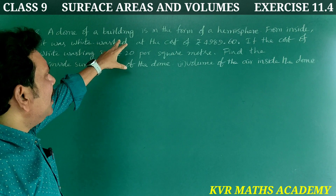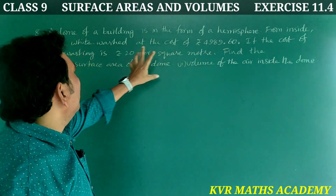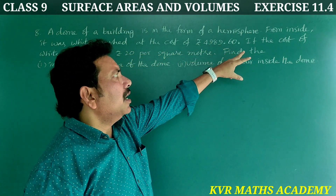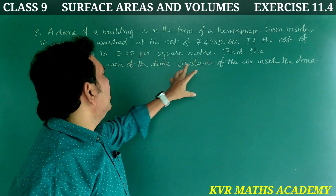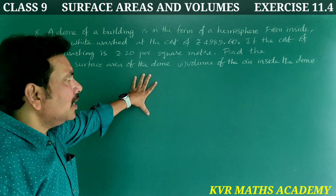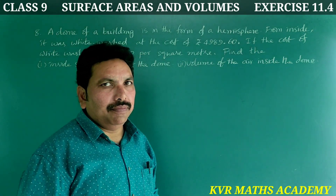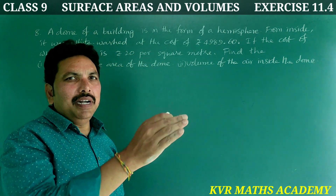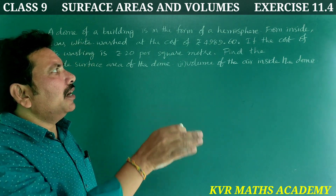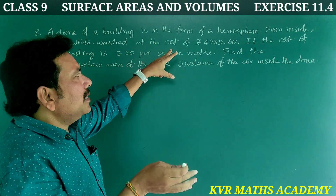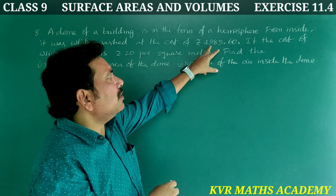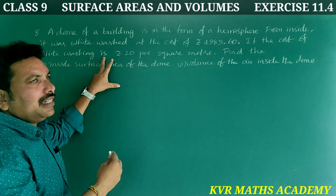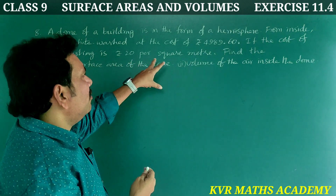8th question: A dome of a building is in the form of a hemisphere. From inside, it was whitewashed at a cost of rupees 4,989.60. If the cost of whitewashing is rupees 20 per square meter, find the inside surface area of the dome and the volume of the air inside the dome.